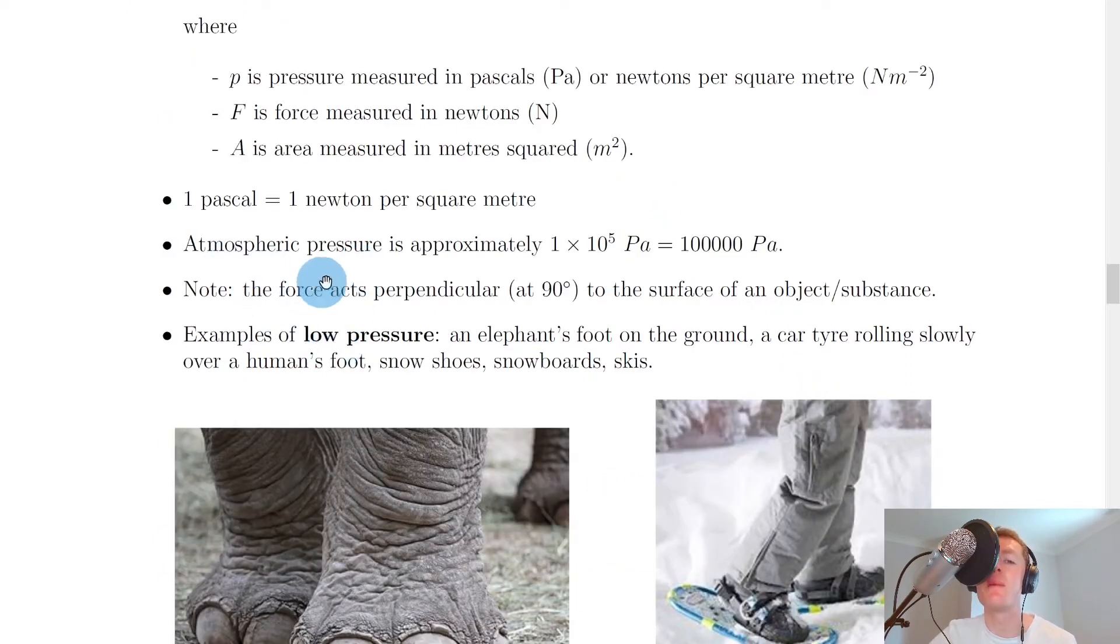We should also be aware of atmospheric pressure, which is approximately 1 times 10 to the 5 pascals, which is the same as 100,000 pascals. This might be useful for questions which involve atmospheric pressure where it doesn't explicitly tell you what atmospheric pressure is. So sometimes it's good to remember that it's 1 times 10 to the 5 pascals.